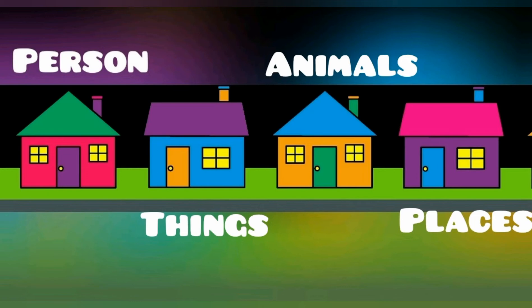In the second house there are names of things. Here there are all kinds of things, which can be found in the last video. After that we have the animals house. Here there are also names which are the names of animals, and those animals can be found in the last video.